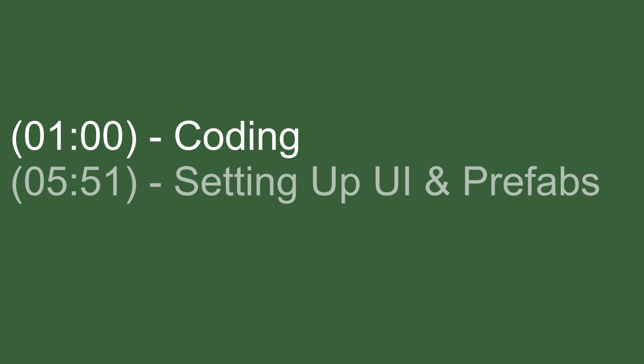This video is split up into three parts. Part one will be writing the code so that the player can input their name and save it, and also the code for the UI and for the network manager. Then for step two, we'll be actually setting up the UI itself in Unity, making sure we've got all the scripts on the right game objects, setting all the dependencies, making sure the buttons call the right methods.